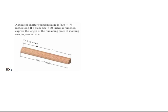Lastly, we have this beautiful word problem. It says a piece of quarter round molding is 13x minus 7. That's the length of this entire piece of wood here, this molding. It says if a piece 2x plus 2 is removed, that's this piece right here. They're taking this piece and removing it. They want to know the length of the remaining piece of the molding. That's this part that's left over, the part that we don't know.